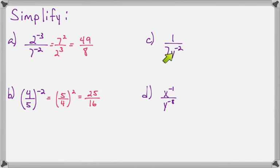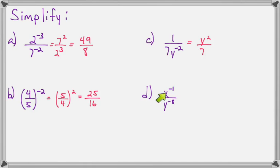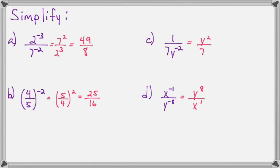For part C, I will move the y into the top, but the 7 has a positive 1 exponent already, so it will stay — giving y squared over 7. And with part D, both of these have negative exponents, so I'll move them both. When I put y to the negative 8th in the top, it becomes y to the positive 8th. x to the negative 1 in the bottom becomes x to the positive 1, which is simply y to the 8th over x.